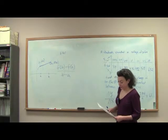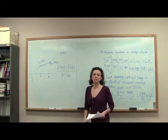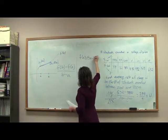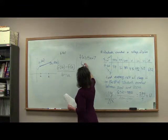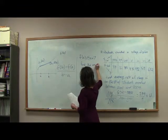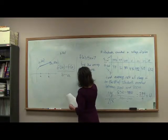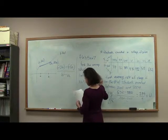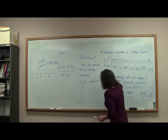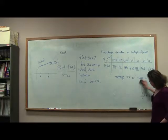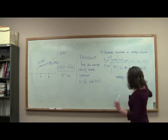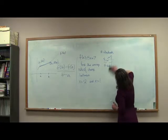When we're talking about the average rate of change, we are just thinking about our slope. So, what if I give you this function and I want us to find the average rate of change between x equals negative 2 and x equals 1? Those of you who have taken an algebra class recently are going to be able to look at this and know the answer, but let us pretend we don't remember.